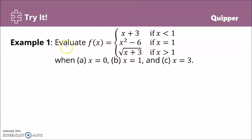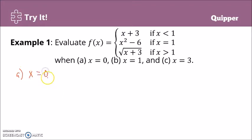Let's have an example. Let's evaluate the function. Remember, this is a piecewise function — the set is composed of two or more expressions because of the intervals. We have f(x) = x + 3 if x is less than 1, x squared minus 6 if x equals 1, and square root of (x + 3) if x is greater than 1. For letter A, x equals 0. Remember, 0 is less than 1, so it belongs to the first expression.